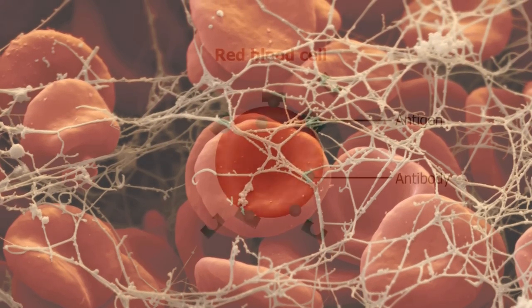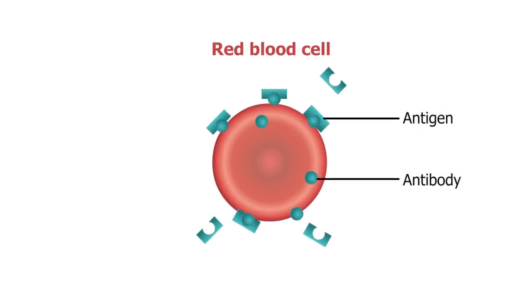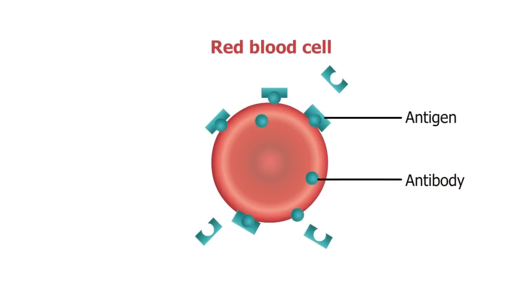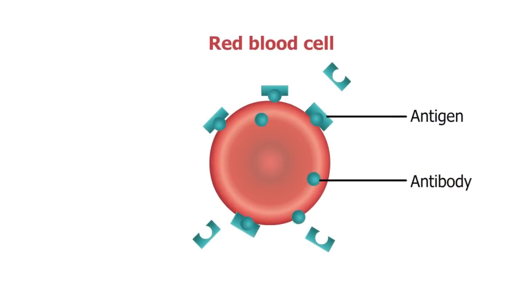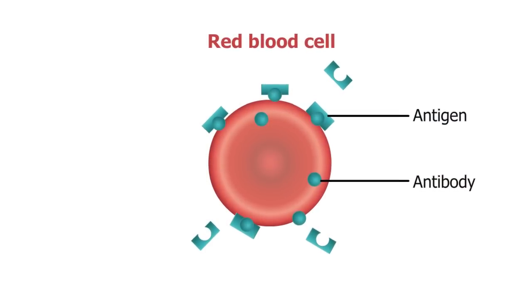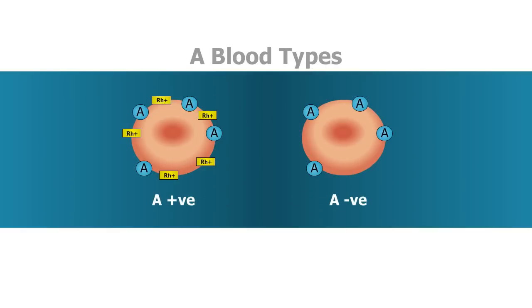There are certain protein molecules called antigens located on the surface of the red blood cells, and antibodies which are in the blood plasma. The differences in human blood are due to the presence or absence of these antigens and antibodies. Individuals have different types and combinations of these molecules.